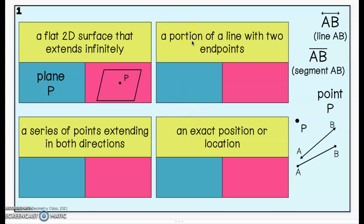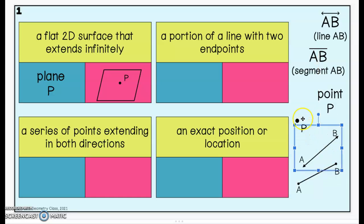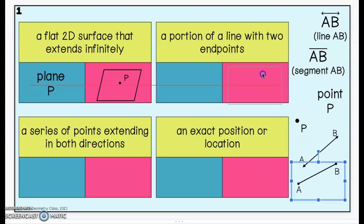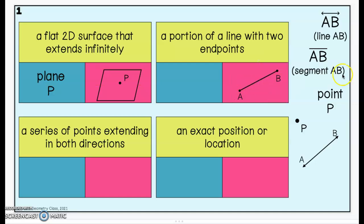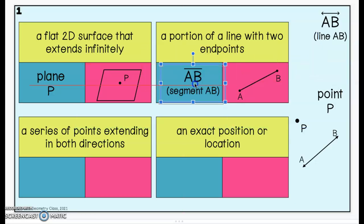A portion of a line with two endpoints — I think the picture is going to be easiest to do first. We have three options here, and we know that two endpoints must be this one. Endpoints are where something starts and stops. So this has two endpoints, and it is a line segment. A portion of a line or a piece of a line that starts and stops is a segment.